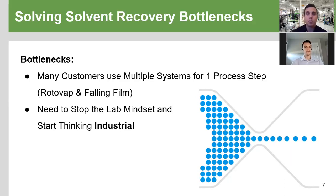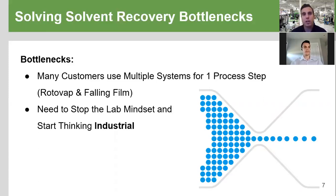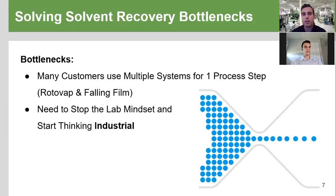Right now, a lot of companies are looking at their process as individual steps and individual systems — a first system for bulk recovery to get most of the solvent out, a secondary system for residual ethanol removal, then the decarb step where any remaining ethanol could be boiled off and lost. Each of these steps may require different operators or one operator who can only oversee so many at a time. At the end of every process there's a stop in production. This is why solvent recovery and decarb has become a major bottleneck.